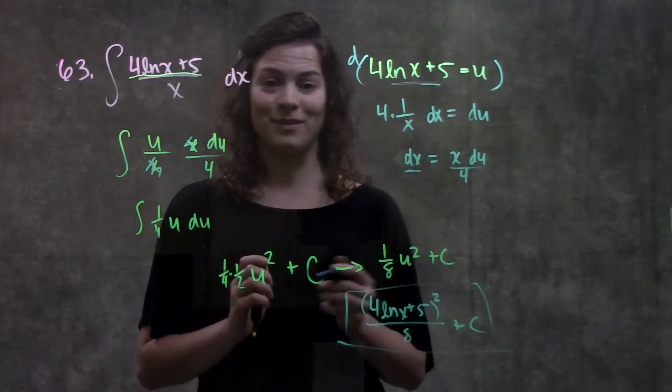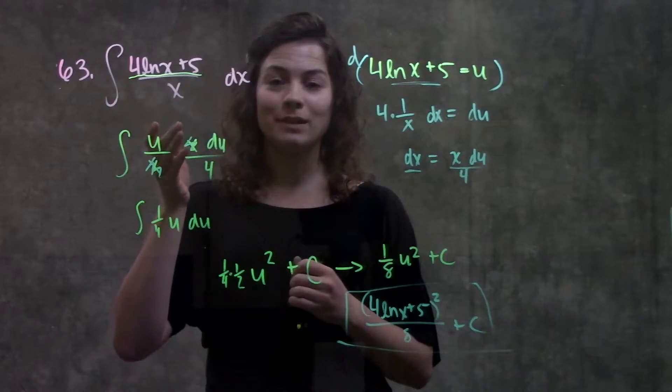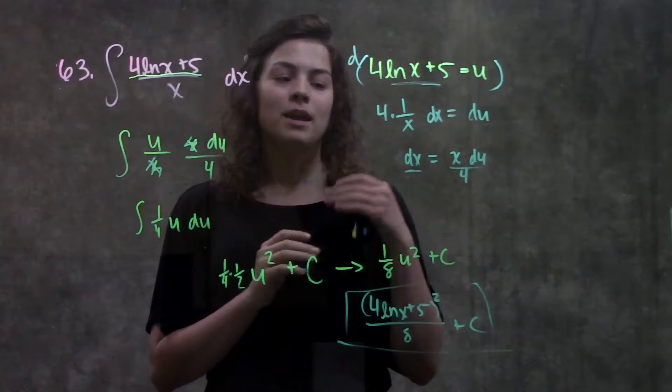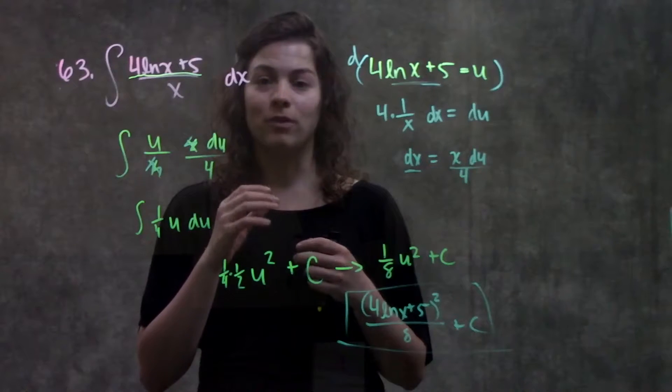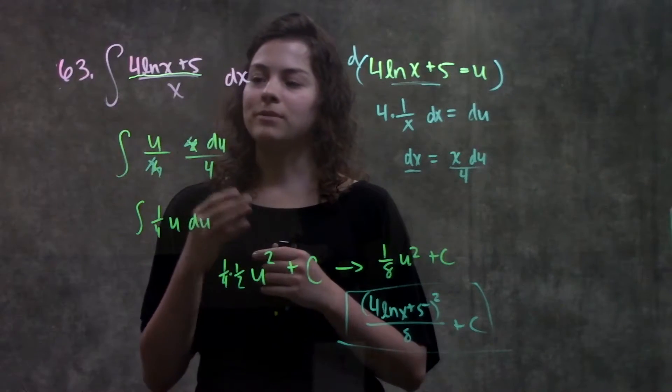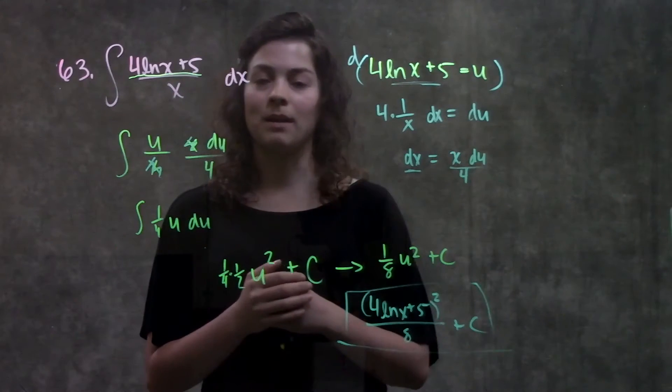And that's it for this problem. So, we learned in this section that we have a really confusing problem to start with, but using a couple different methods that we've been learning, either u sub or the formulas that we've learned in this section, we're able to rewrite it in a way so that we know how to take the integral of it, and our answer comes out pretty simply.